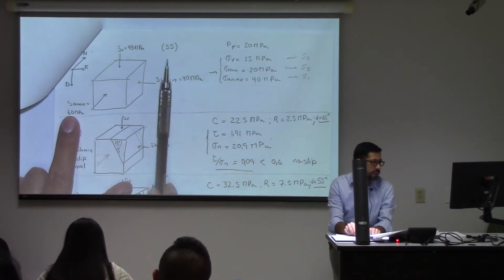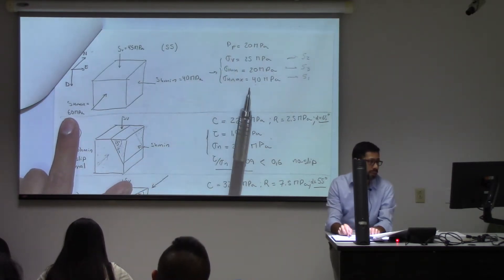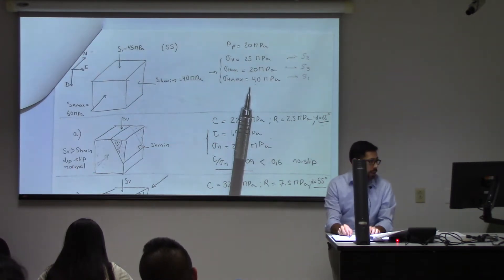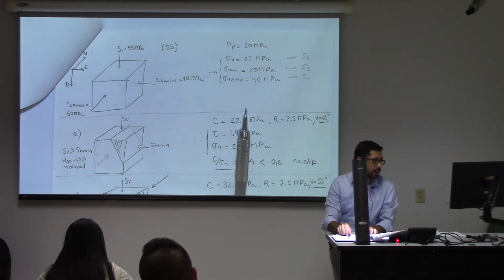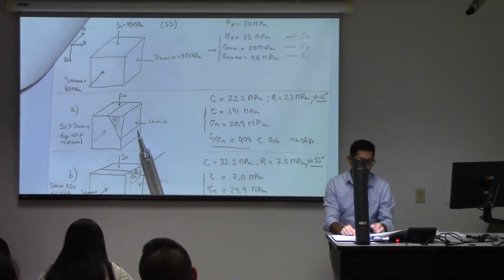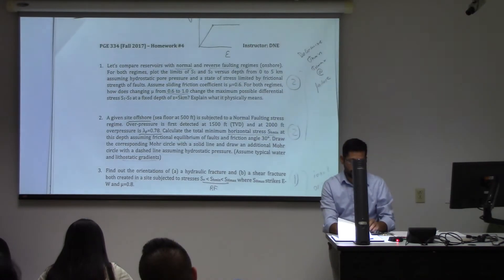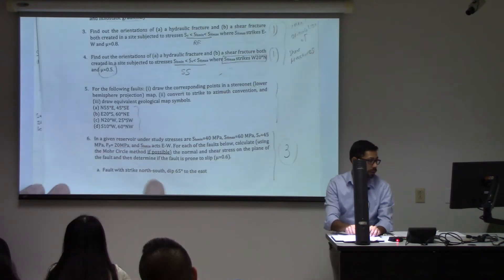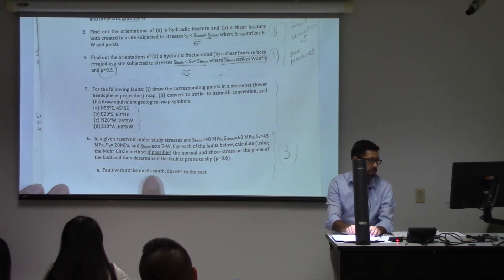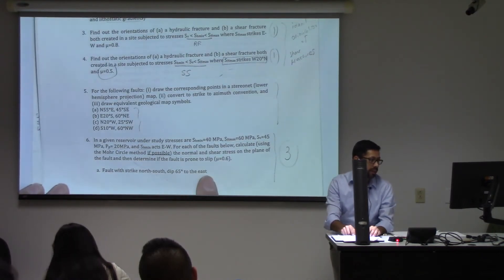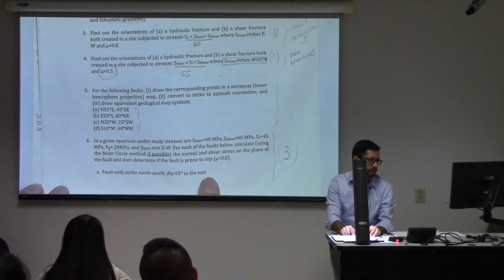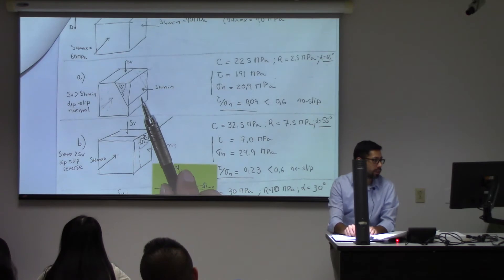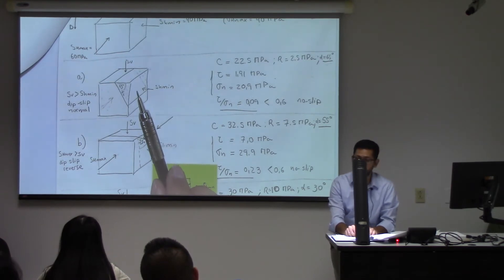After you do that, you know pore pressure and you can calculate your effective stresses. The next step is given information about a particular fault — in this case, this one is north-south, 65 degrees to the east. You have to calculate what is the normal stress and the shear stress on that fault.